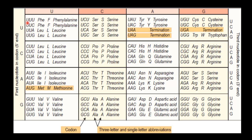For example, UUU represents the amino acid phenylalanine. UUC also represents phenylalanine. UUA and UUG represent leucine. So for phenylalanine, there are two codons, whereas for leucine there are six codons. This demonstrates degenerate coding, where one amino acid can be encoded by multiple codons.